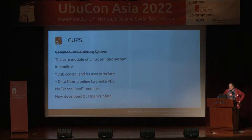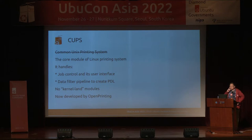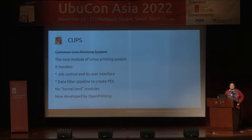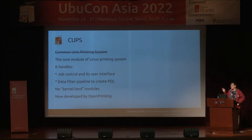The center of this printer architecture is CUPS. Its former full name is Common Unix Printing System, but currently it's just a trademark — CUPS is just CUPS. It is the core module of the Linux printing system: it handles job control, user interface, and the data filter pipeline to create PDL. Originally developed by Apple, Apple has since reduced involvement in the open source version, so OpenPrinting forked it and now maintains the current upstream.